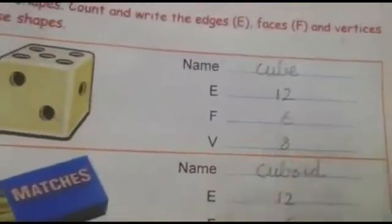Vertices are 8. Now look here — cube and cuboid have the same edges, same faces, and same vertices. Now which shape is this? Cylinder. Your pencil is also a cylinder.